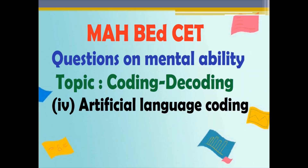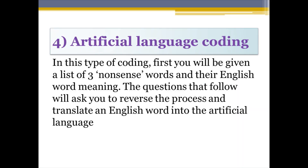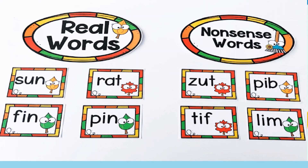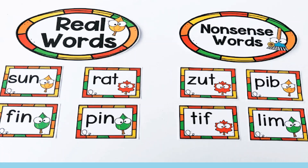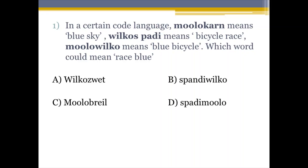Our last topic was artificial language coding. Let's see what happens — we have a list of nonsense words. Nonsense word means a word that has no meaning in the English dictionary, and we have assigned a meaning to it in English. So we have to reverse the process here, meaning we have to make a nonsense word by using the information in the question.